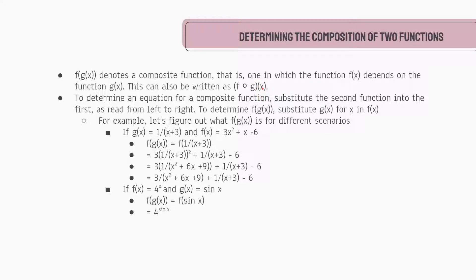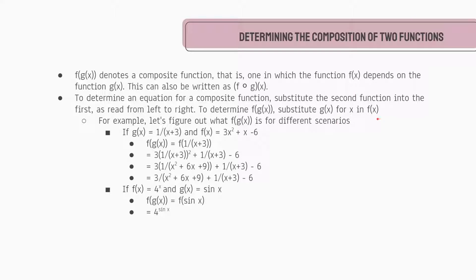We've seen a really similar notation before when we're subtracting or adding two functions — for example, (f minus g)(x). When it comes to determining an equation for composite functions, we simply substitute the second function into the first, as read from left to right. So to determine f(g(x)), we substitute g(x) for x in f(x).